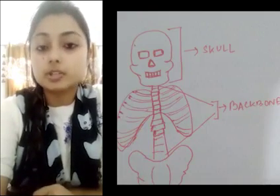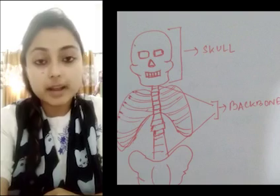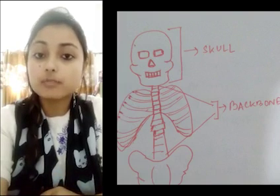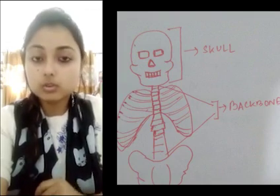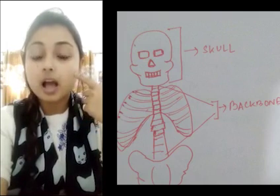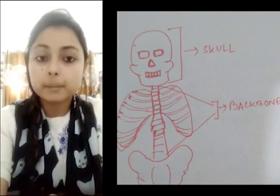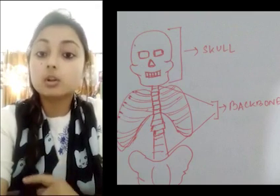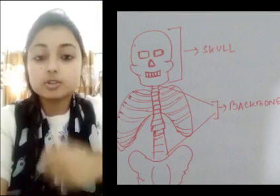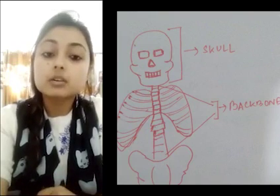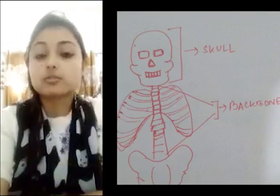Now let us learn about the skull. The skull is made up of flat bones. It includes the bones of our head, face, and jaws — both the upper jaw and the lower jaw. These bones are very closely joined to each other. All the bones of the skull except the lower jaw are fixed — you can move only your lower jaw, not any other joint of your face or head. The human skull consists of 22 bones: 8 bones form the part of your skull and 14 bones form the face.